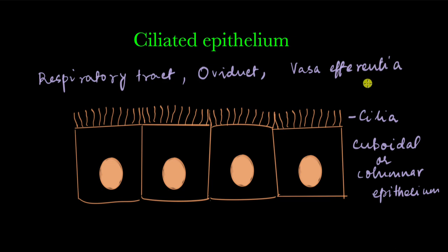These are some examples of where they are found, but why is ciliated epithelium found in these places? To understand that, let's take a look at what these cilia exactly do.